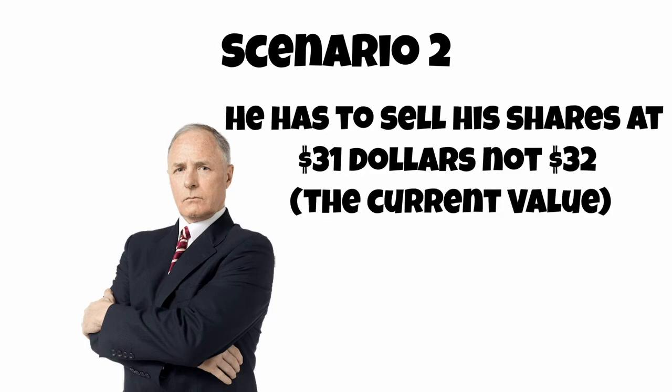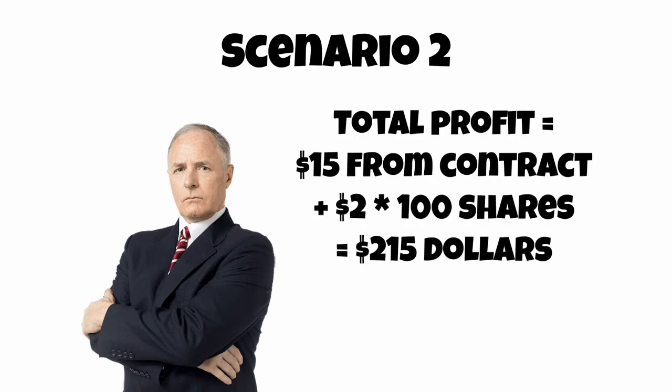Since Bob sold the contract to Dave at a $31 strike price, he has to sell his shares at $31 to Dave. Bob's total profit is $15 from selling the call plus $2 per share profit from selling the stock at $31, for a total of $215 profit.